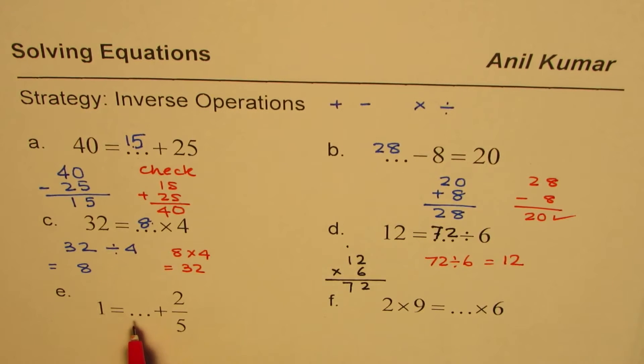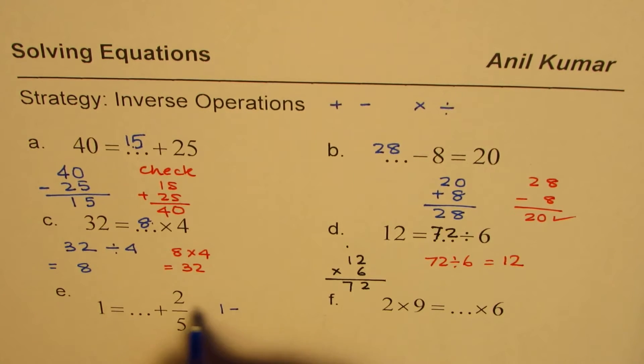Now here in fractions, do the same thing. 1 plus what is 2 over 5? So you say 1, what is inverse of plus, minus the number 2 over 5. That should give you 5 minus 2, which is 3 over 5. So 3 over 5 is the answer for this one, which you can check. 3 plus 2 is 5. 5 over 5 is 1.